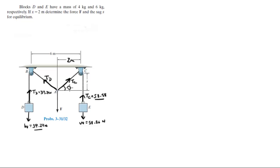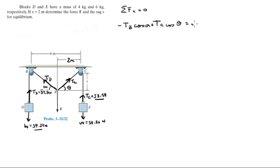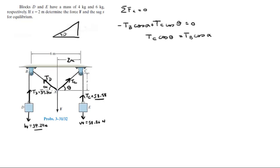We have this angle theta, this angle alpha, and this is S. The sum of the forces in the x-direction is equal to 0, so: negative Db cosine of alpha plus Dc cosine of theta equals 0. Therefore, Dc cosine of theta equals Db cosine of alpha. Let me draw some triangles — this is theta, this is alpha.